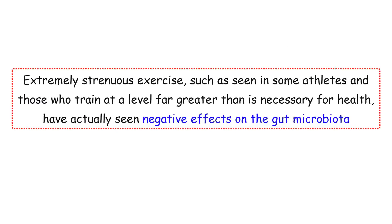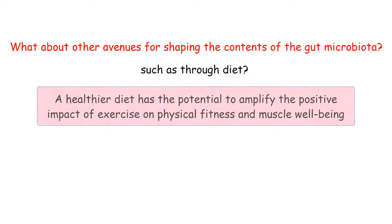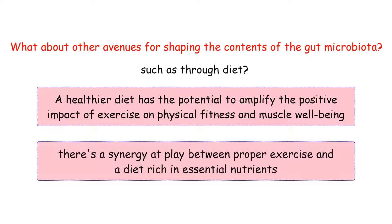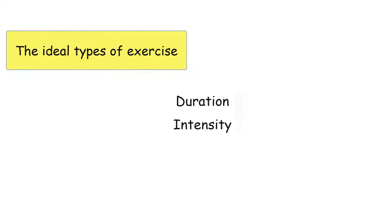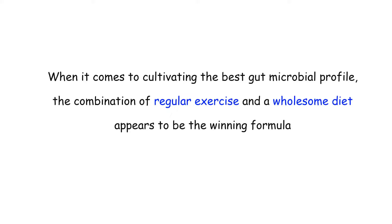However, some studies showed that extremely strenuous exercise — such as seen in some athletes and those who train far beyond what is necessary for health — has actually produced negative effects on the gut microbiota. This leads to the thought-provoking question of what other avenues exist for shaping the gut microbiota, such as through diet. Research reveals that a healthier diet has the potential to amplify the positive impact of exercise on physical fitness and muscle well-being. The ideal types of exercise, including duration and intensity, are currently under investigation, yet one resounding theme emerges: the combination of regular exercise and a wholesome diet appears to be the winning formula for cultivating the best gut microbial profile.